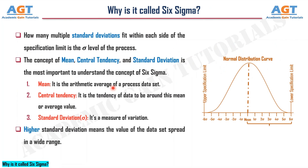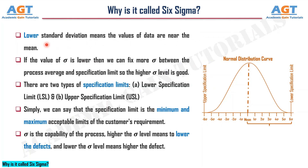Why is it called Six Sigma? How many multiple standard deviations fit within each side of the specification limit is the sigma level of the process. The concept of mean, central tendency, and standard deviation is most important to understand Six Sigma. Mean is the arithmetic average of a process dataset. Central tendency is the tendency of data to be around this mean or average value. Standard deviation, or sigma, is a measure of variation. Higher standard deviation means the values of the dataset spread over a wide range, while lower standard deviation means the values are near the mean. If the value of sigma is lower, we can fit more sigma between the process average and specification limit, so a higher sigma level is good.